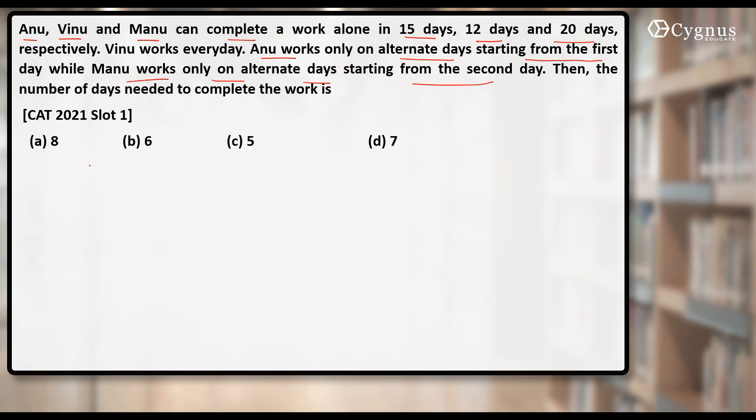Let's calculate their one day's work. Since the values are 15, 12 and 20, let's assume that the total work is LCM of 15, 12 and 20, that is 60 units. Let's assume that this is the total work.